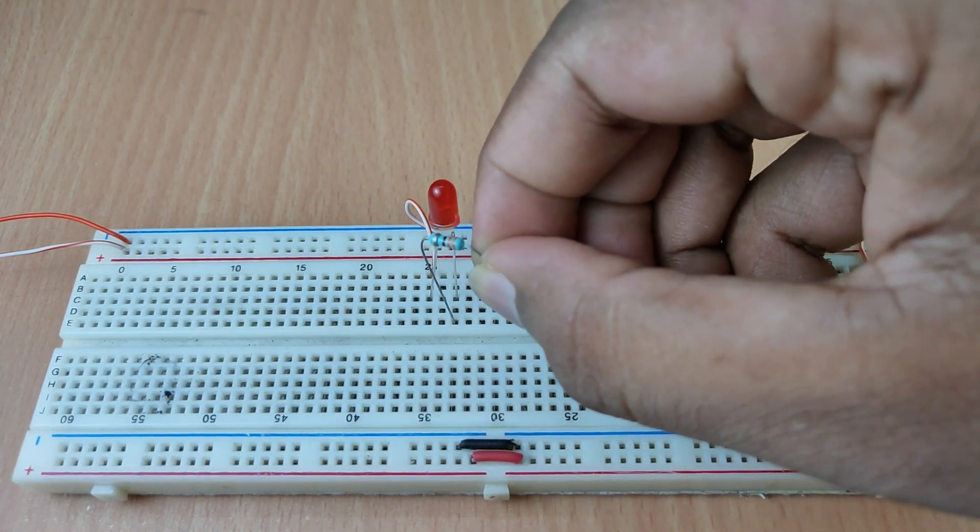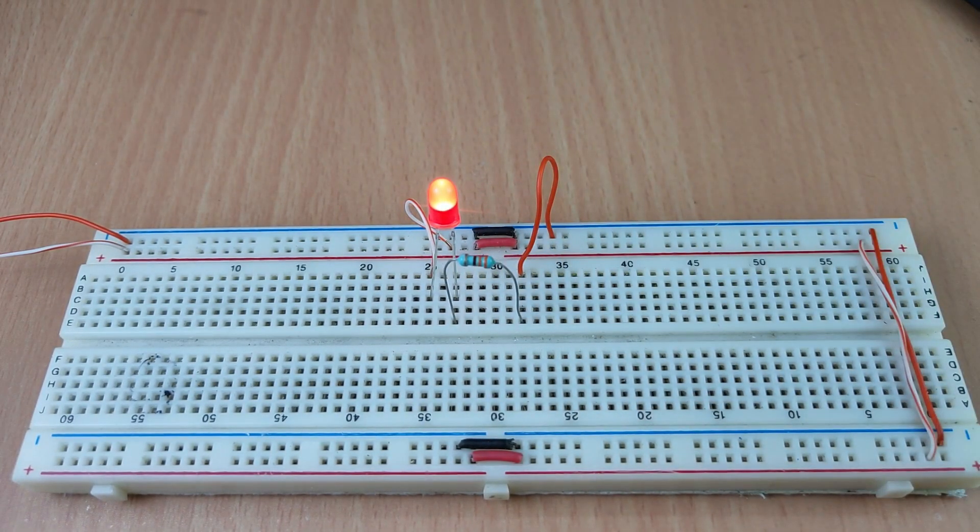To light the LED safely at 9V, I use a 330 ohm resistor in series. So how did I know that? Let's see here.